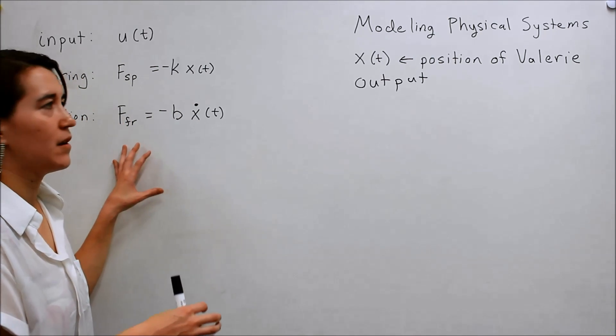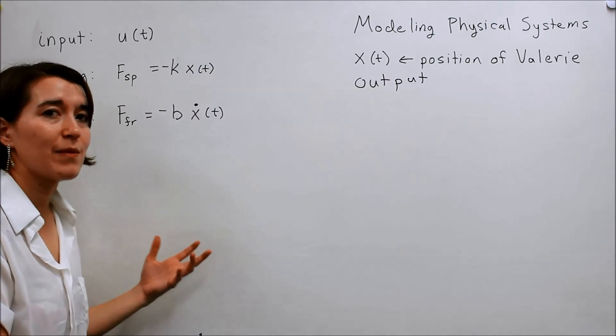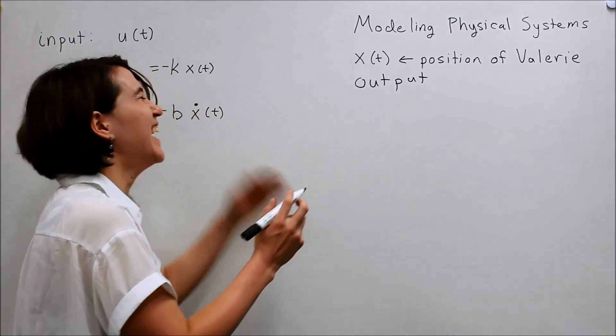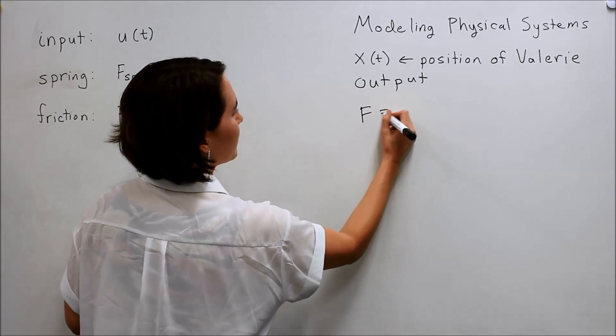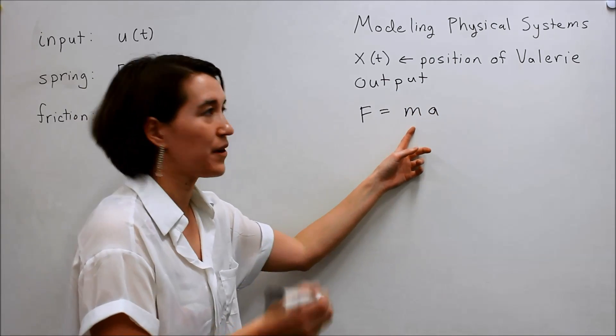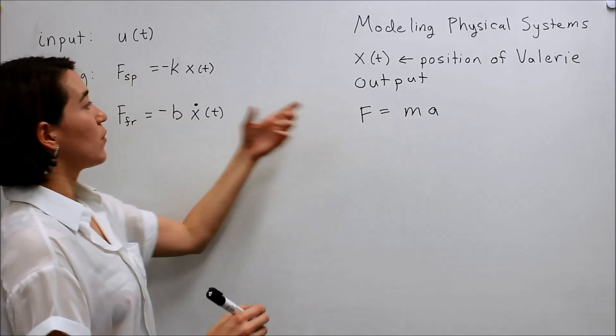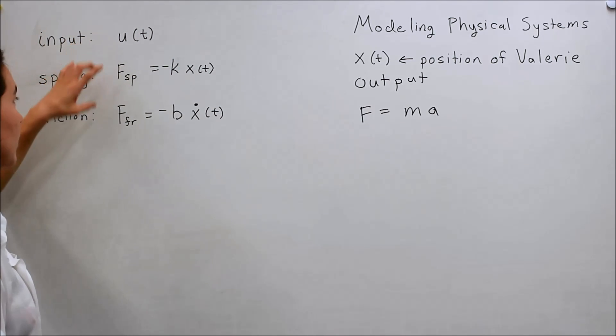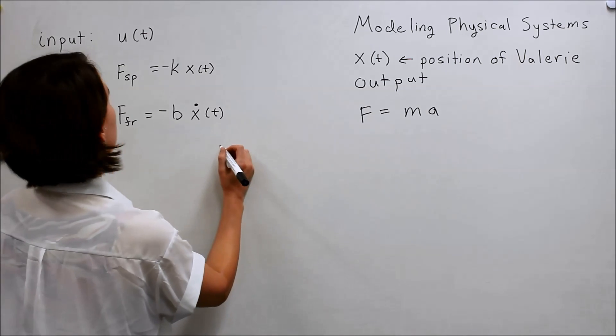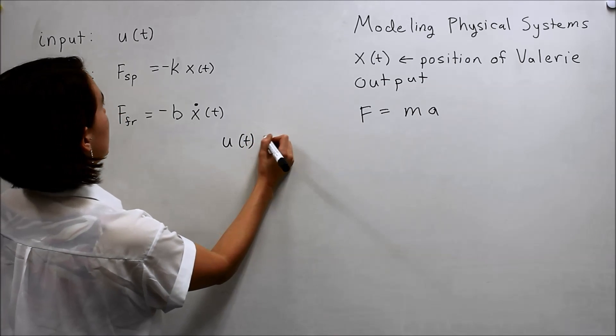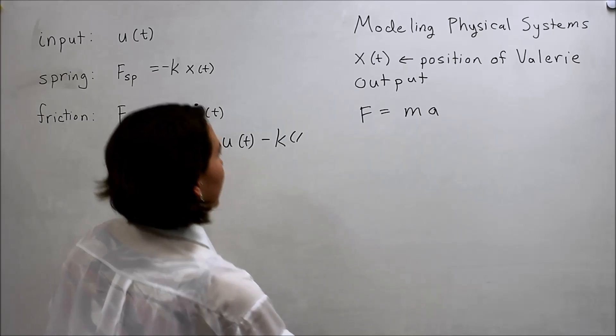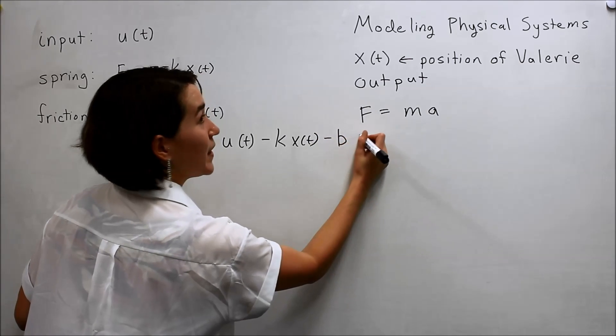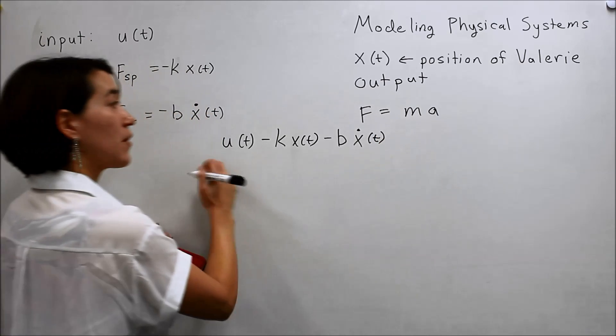So now we have an input and an output, and we need to figure out how to derive the transfer function. Well, we're missing one key thing here: how do these forces relate to each other? Well, let's think back to the basic fundamental equation. We'll think back to F equals ma, Newton's laws. F equals ma. M is the mass of Valerie, we know that, no problem. F, well, we know the forces, we just outlined them. And really, the force acting on Valerie is the input plus the spring plus the force of friction. So let's add those all up here. So we'll do u(t) minus kx(t) minus b x dot(t). So those are our forces summed up.